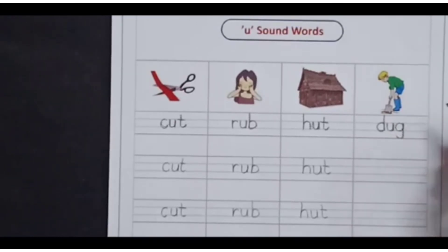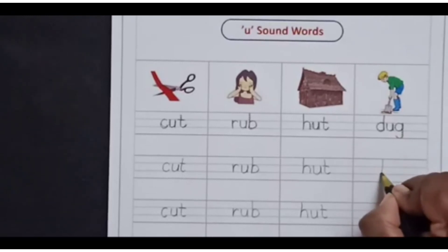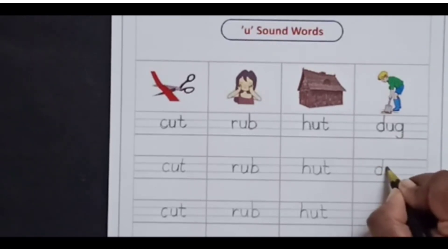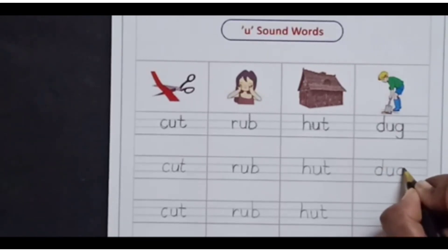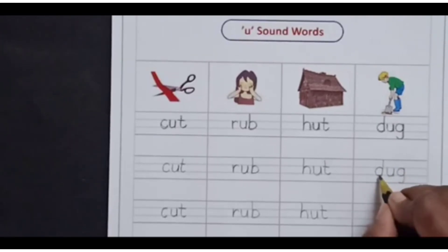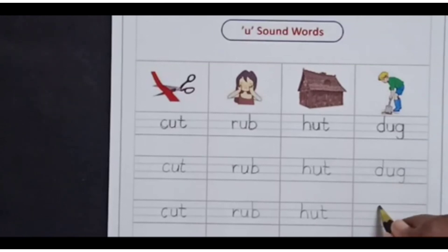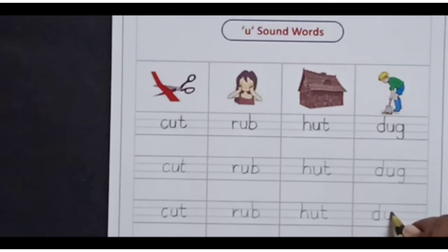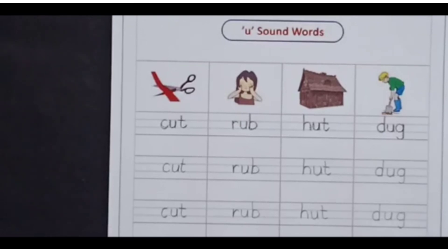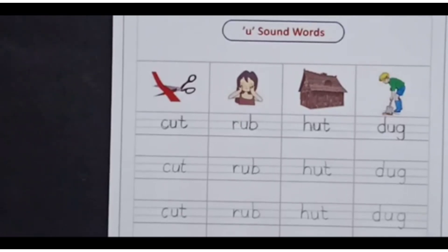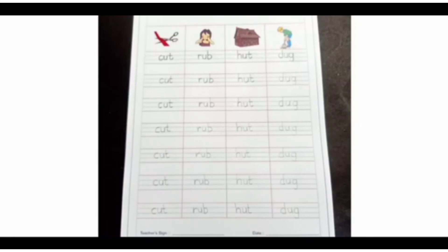D-U-G, dug. The sound of D is D, the sound of U is U, and the sound of G is G. D-U-G, dug. In this way, you have to finish writing U sound words in your class workbook.